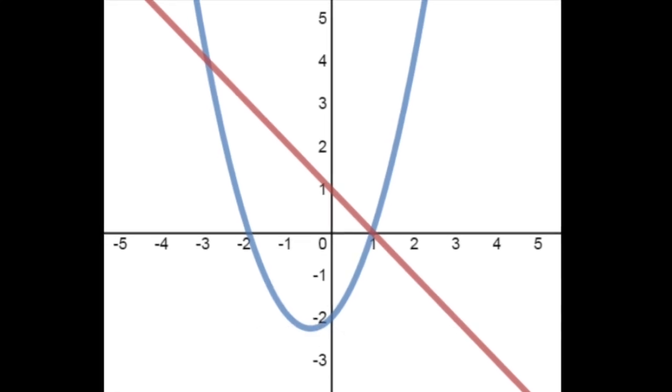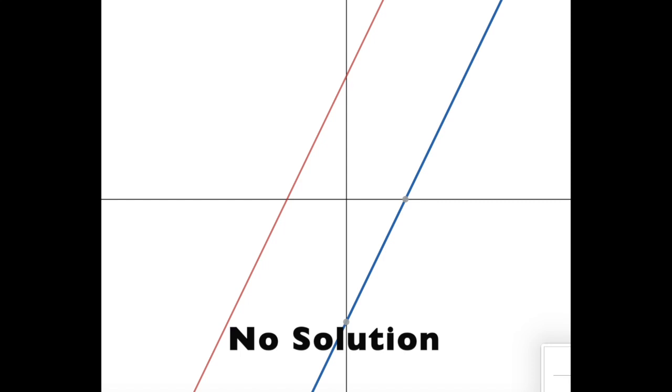But what about a no solution? What would a no solution look like? That would mean that the two lines never intersect. They would have to be parallel and just never cross paths. And if they never intersect, you have no solution.